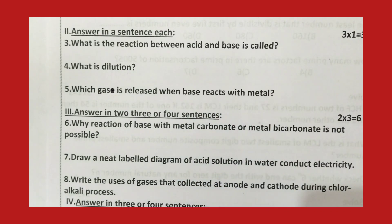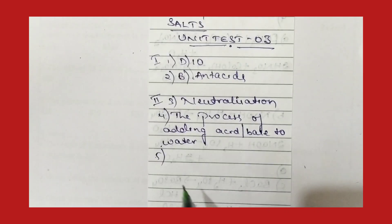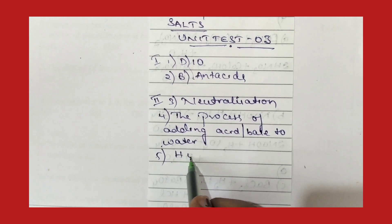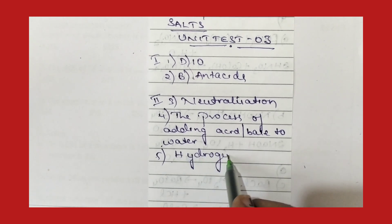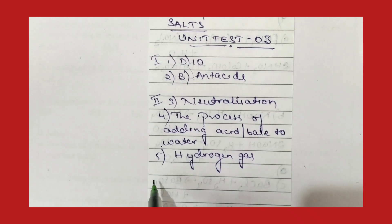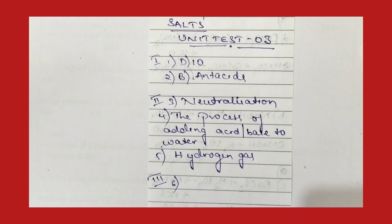Question number five: which gas is released when a base reacts with metal? When a base reacts with metal, it liberates hydrogen gas. So hydrogen gas is liberated.